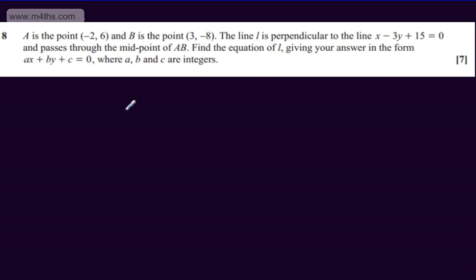For the equation of the line we need two things. We need a point that it goes through and a gradient. So let's start off with the point that it goes through. That's going to be the midpoint of AB.